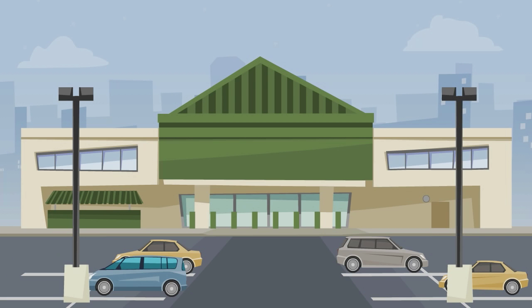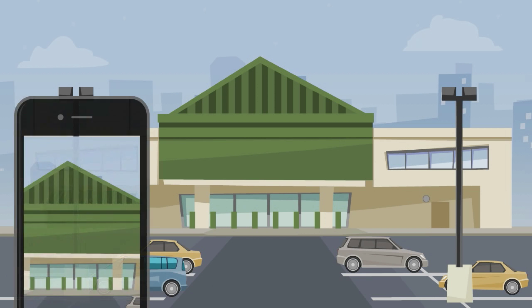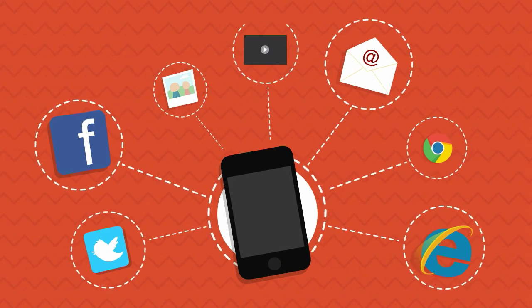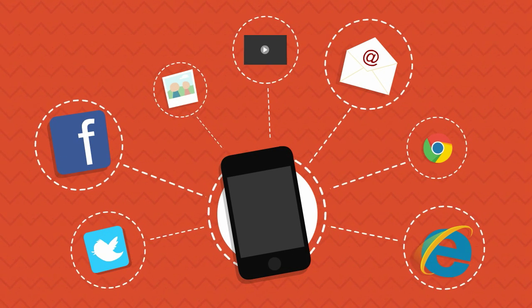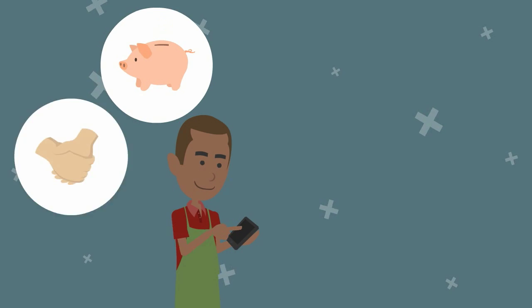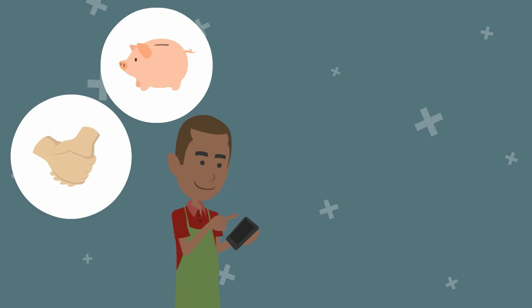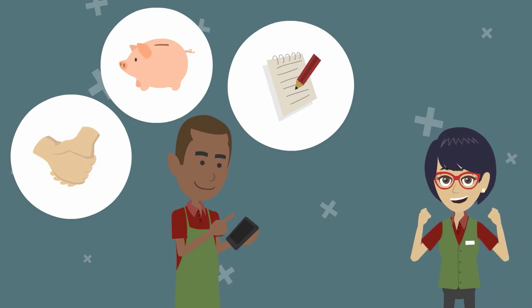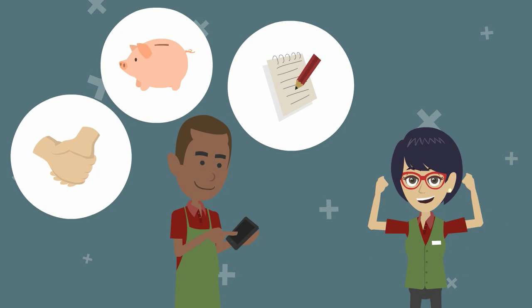Bob wants to host a meet and greet at his store. Using the Member Plus app, he is able to create the event and upload a photo right from his mobile device. The event is promoted on Facebook, Twitter, and his website, all by using the content created in the Member Plus mobile app. He can add hot deals or member-to-member deals to be used on the day of the event, and he can even create a job posting right in the app for that new hire he will need to handle the anticipated growth.